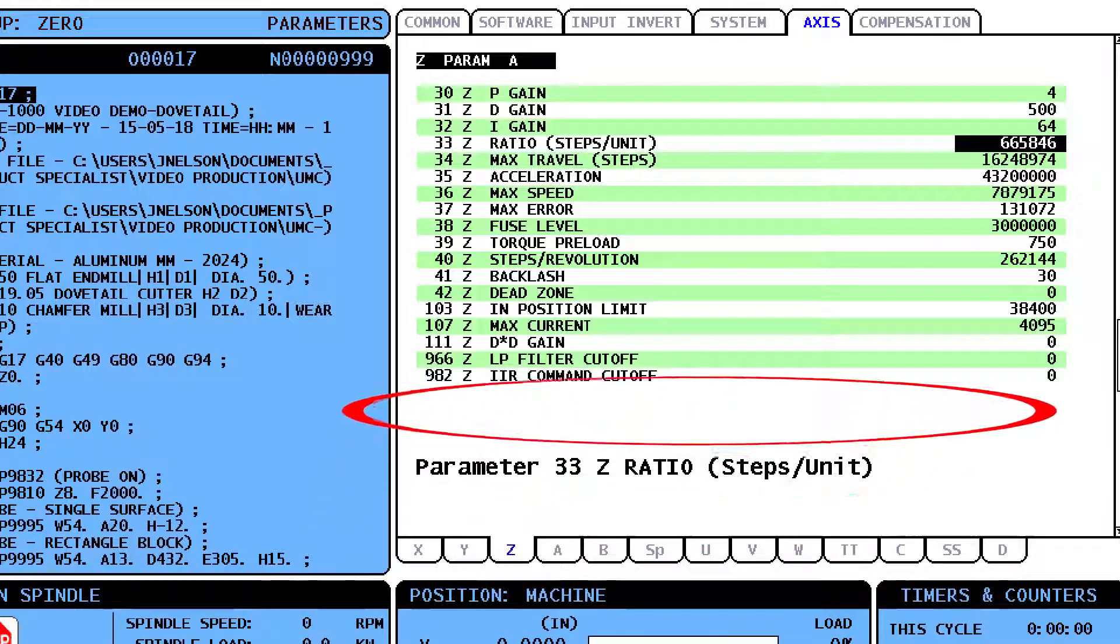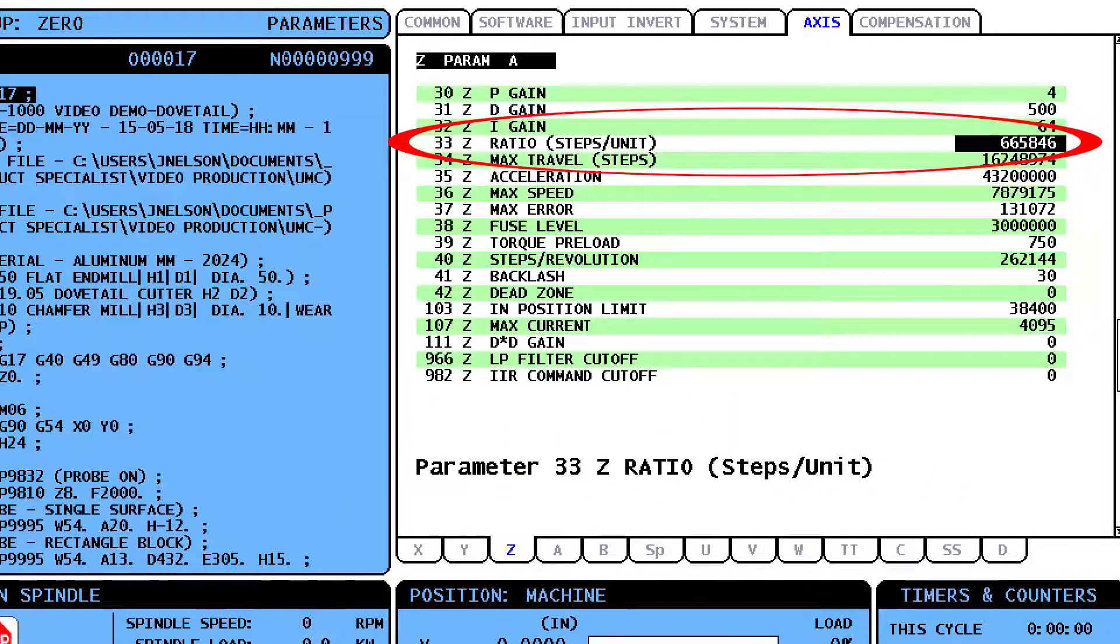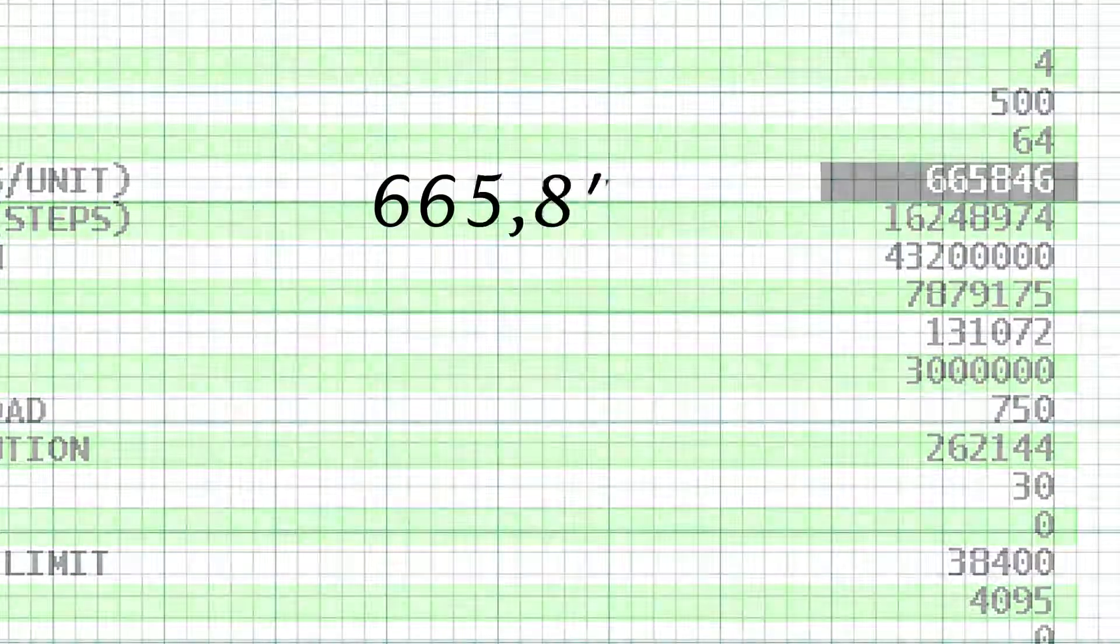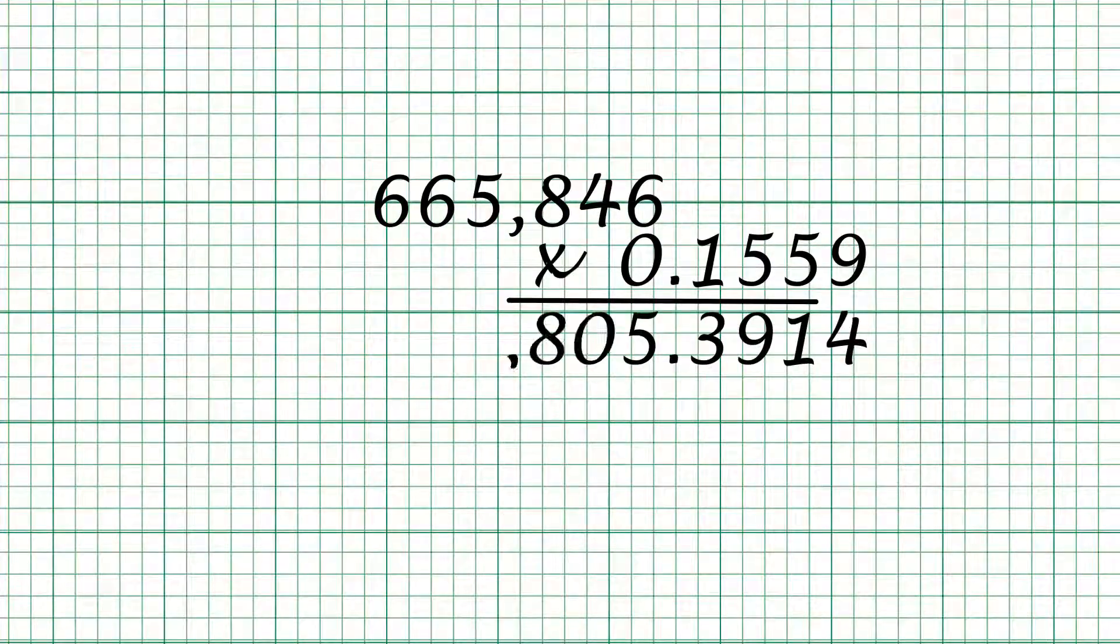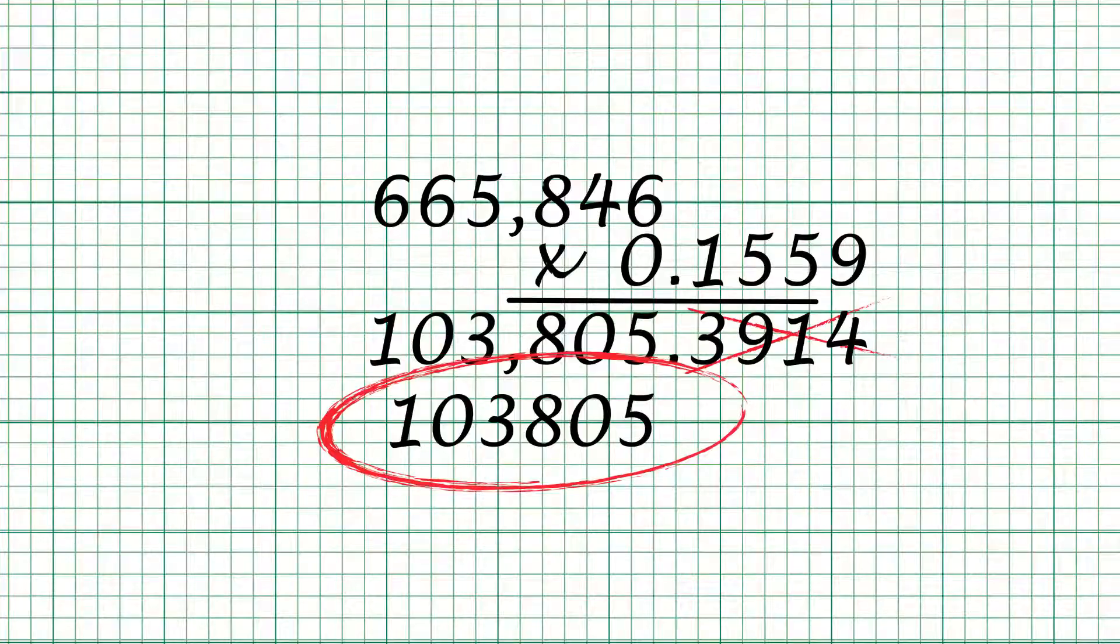Then multiply that number by the value in parameter 33, Z-Ratio-StepsUnit. Remember, all the numbers shown in this video are example values for this machine. Each machine will have different values.